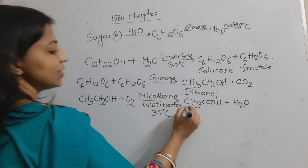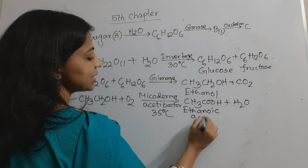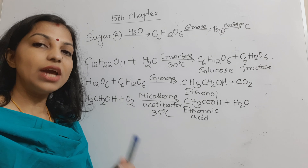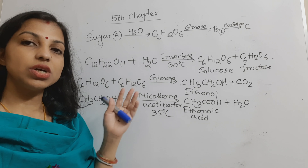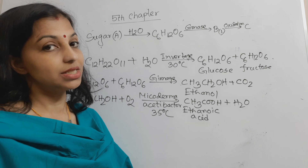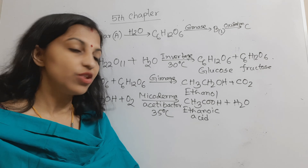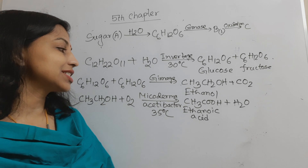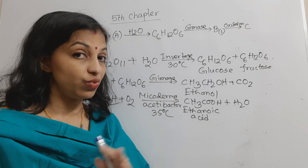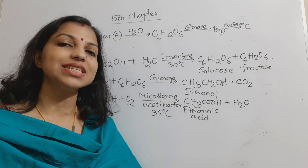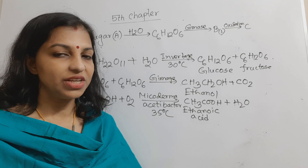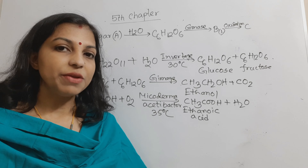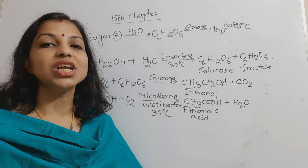When we prepare a 4 to 6 percent aqueous solution of ethanoic acid, that is known as vinegar. To summarize: take sugarcane juice → hydrolyze with invertase enzyme at 30°C to get glucose and fructose → react with zymase enzyme to get ethanol → oxidize with Mycoderma aceti bacteria to get ethanoic acid → prepare 4 to 6 percent aqueous solution to get vinegar. You can even prepare vinegar at home!